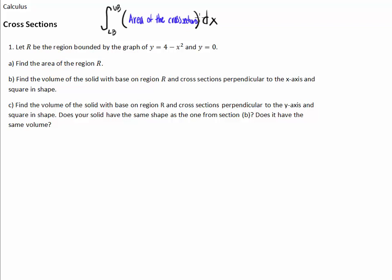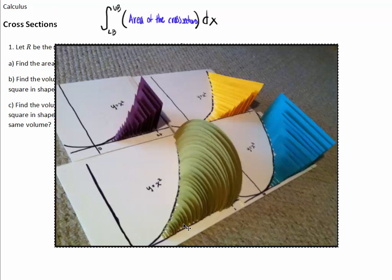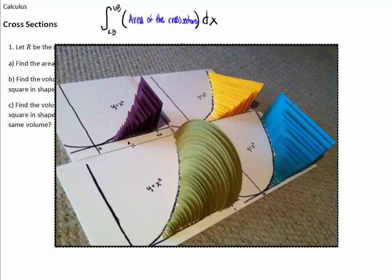Like for this semicircle here, the radiuses are changing, so the formula for the area will have a variable in it. If this was just a straight horizontal line as my region, all the circles would have the exact same shape and there would not be a variable in this equation. But since our areas are changing for our shapes, there's going to be a variable in there.